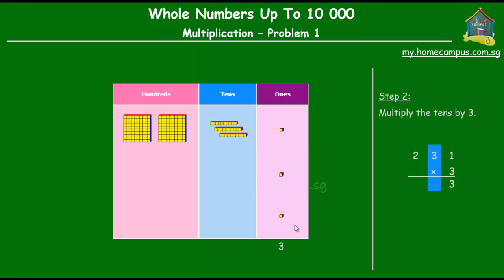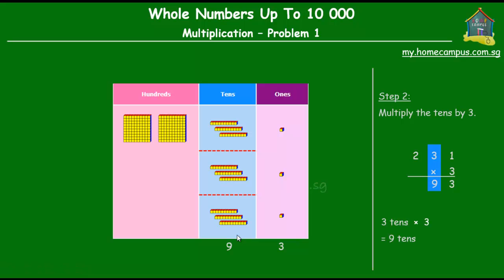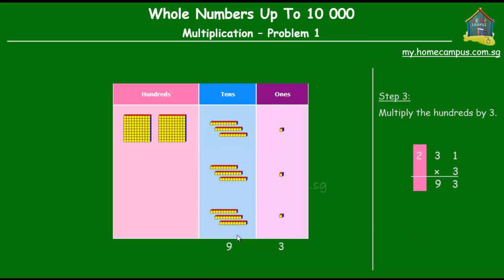Next, we move on to multiplying the tens by three. There are three tens, and when we multiply three tens by three we get one, two, and three sets of three tens. So three tens times three is nine tens. There are nine tens.